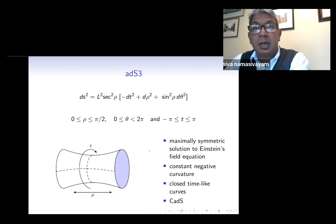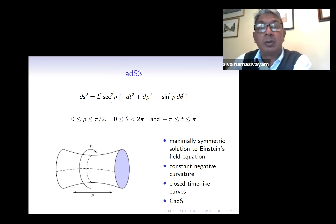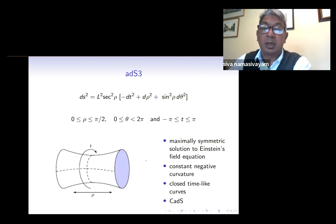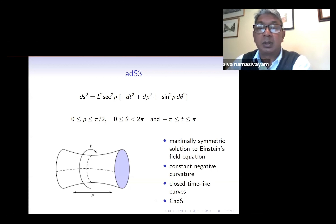Our background spacetime is three-dimensional anti-de Sitter space, which is a maximally symmetric solution to Einstein's field equation with a constant negative curvature. Its metric is shown here where L is the length scale and rho is our radial coordinate which runs from zero to pi over two, where pi over two is the spacetime boundary. The time coordinate is periodic — a feature of ADS — giving rise to unphysical closed timelike curves, shown more clearly in this two-dimensional graphic. To circumvent this we work in the covering space of ADS where the time coordinate is unwrapped and runs from minus infinity to infinity.